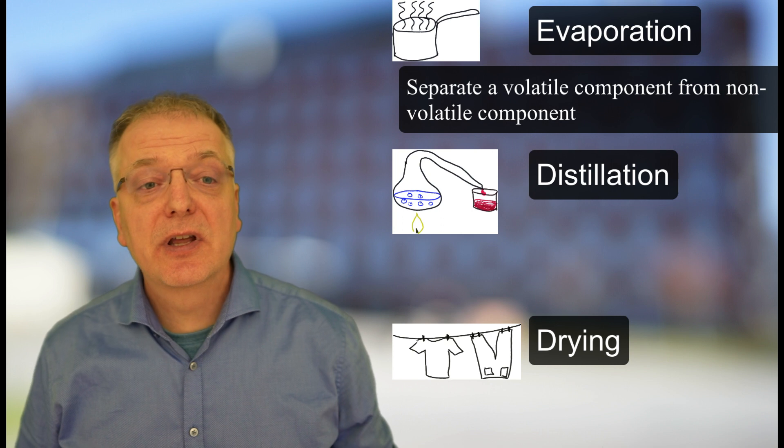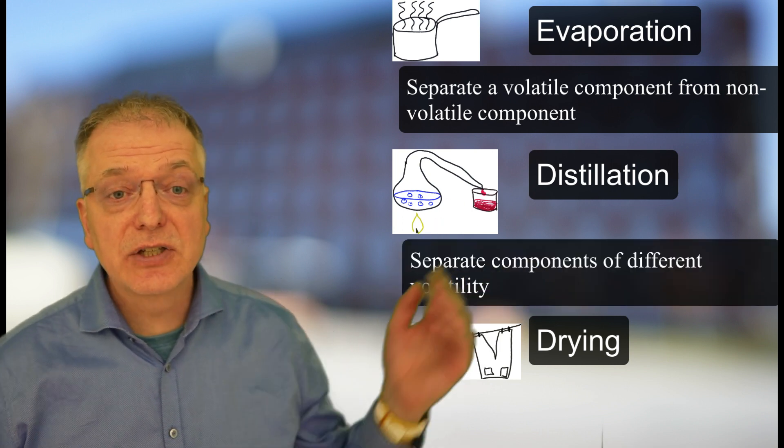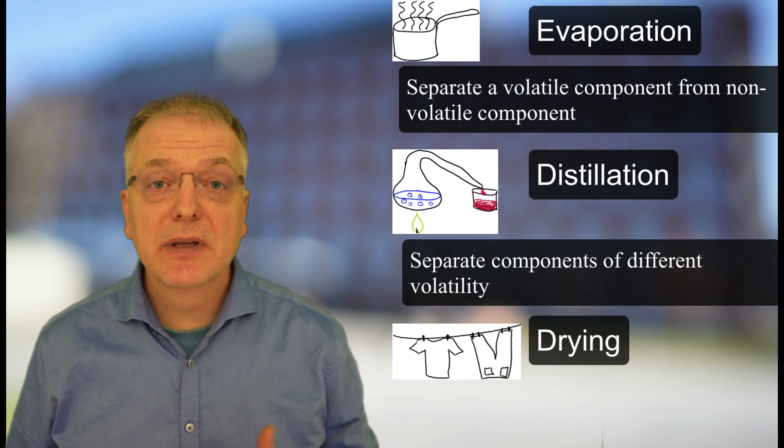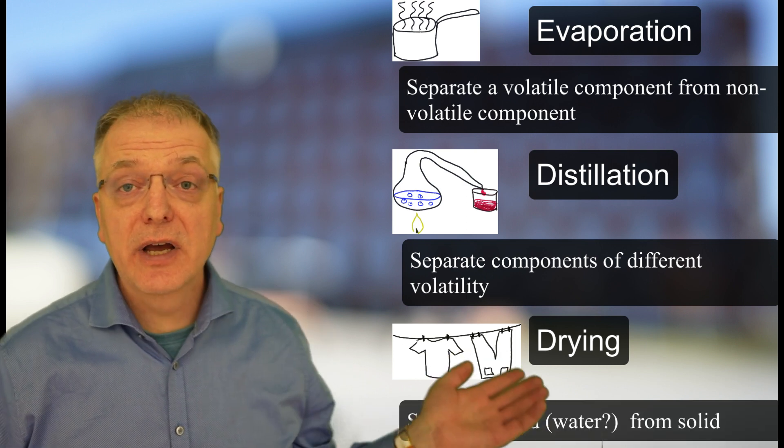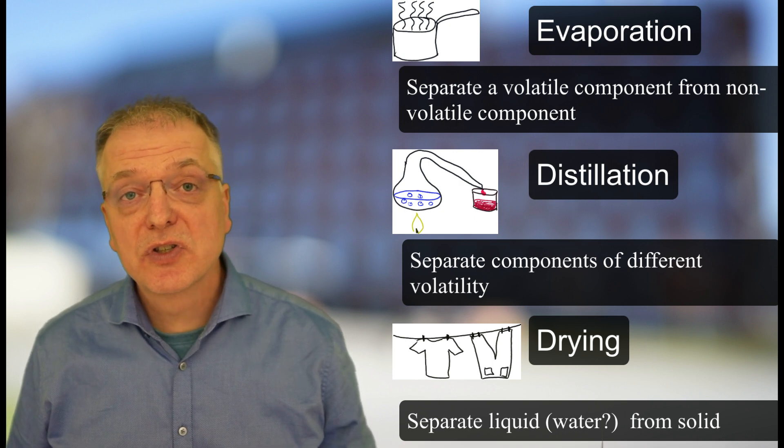In evaporation, we separate a volatile component from a non-volatile component. In distillation, we separate components with different volatility. And in drying, we separate a volatile liquid, often water, from a solid material.